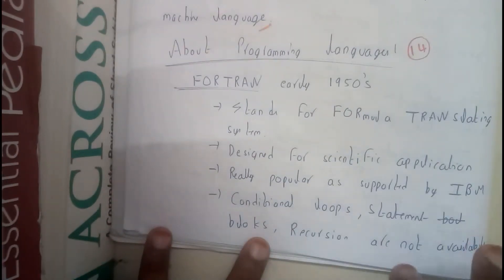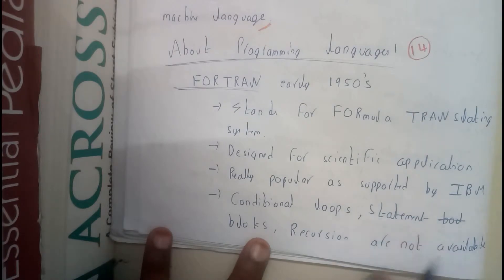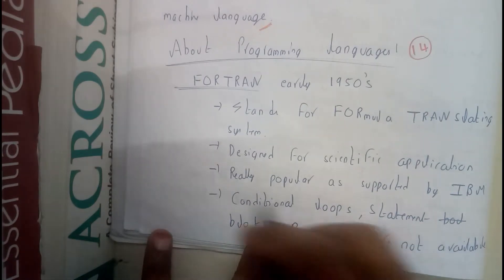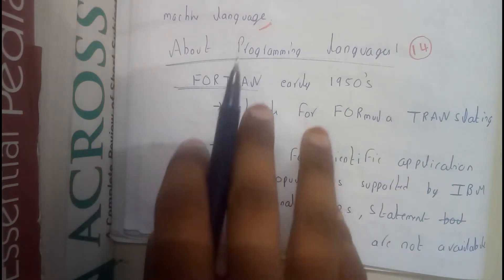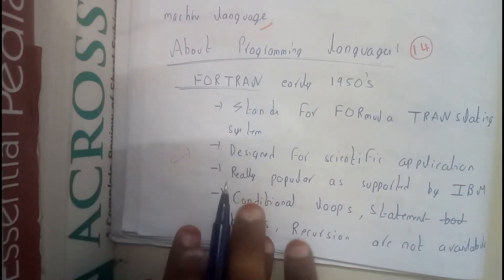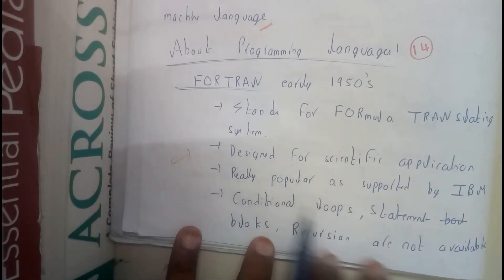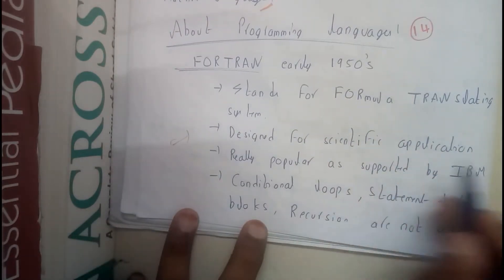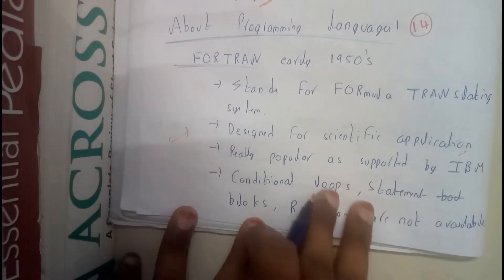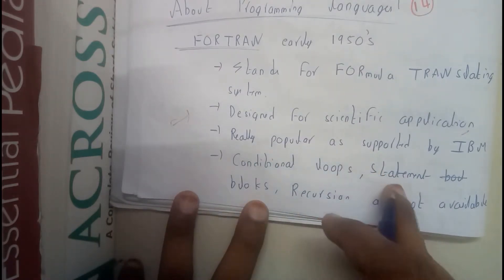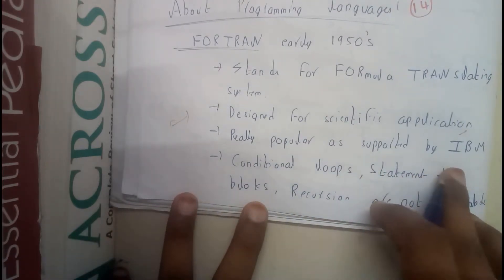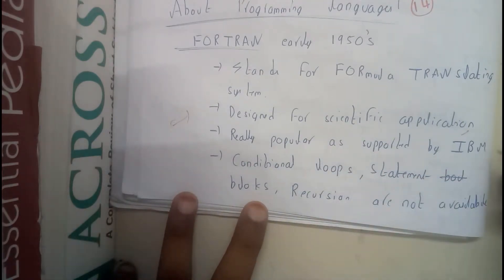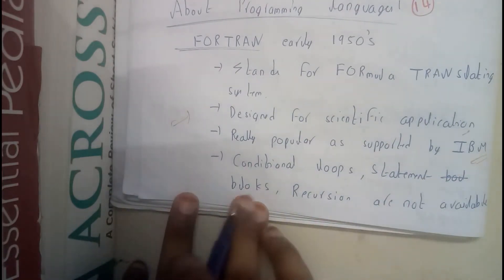Fortran belongs to the mathematical or scientific domain, in which you can create different types of calculators and different types of mathematical equations. It was designed for scientific applications and was really popular as a support for IBM, the most popular company nowadays.